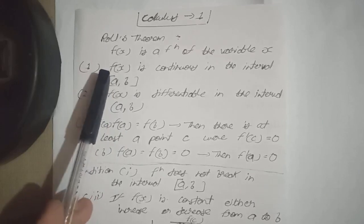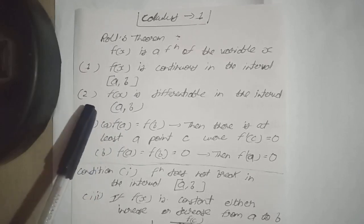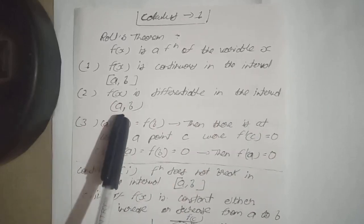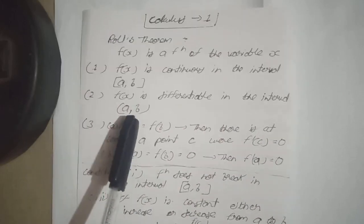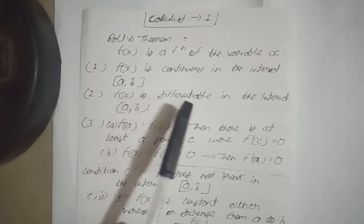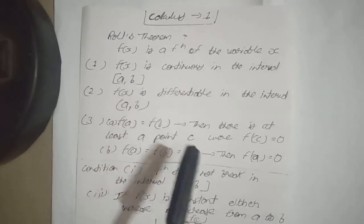Second statement: f(x) is differentiable in the open interval (a,b). f(x) differentiable hooga. Obvious si baat hai ki woh differentiable hooga agar woh continuous hai a se b tak.